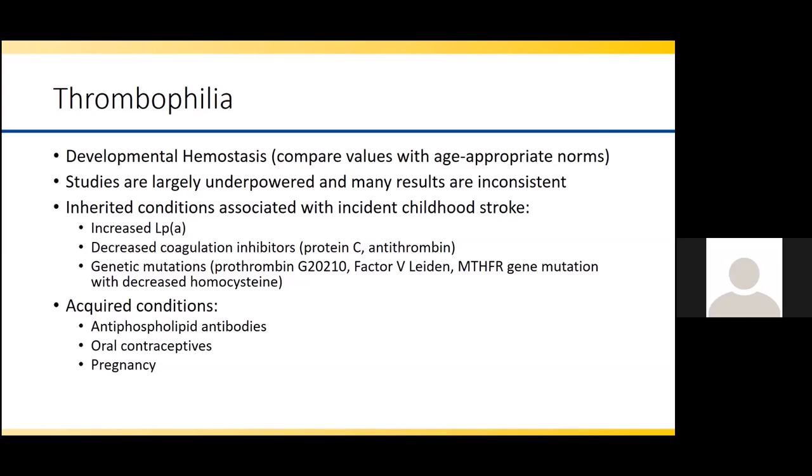Thrombophilia is another diagnosis we think about in a child with stroke. It's very important to consider hypercoagulable states and the concept of developmental hemostasis — different coagulation factors change over time and the clotting system works differently depending on the child's stage of development. Therefore, values must be compared with age-appropriate norms. The most common associations found include inherited conditions such as increased lipoprotein A, decreased coagulation inhibitors including protein C and antithrombin, and genetic mutations. Acquired conditions may include antiphospholipid antibodies, oral contraceptives, and pregnancy.